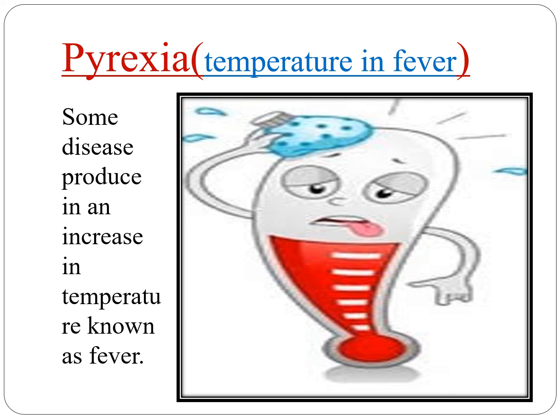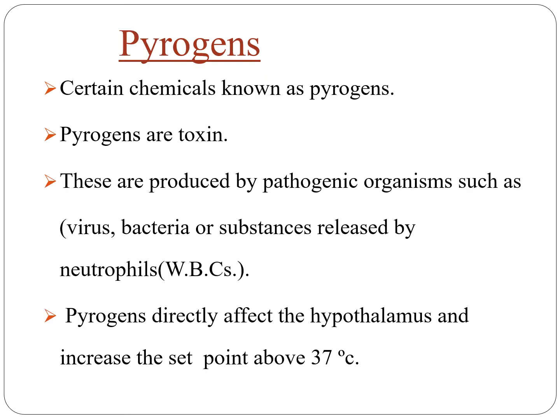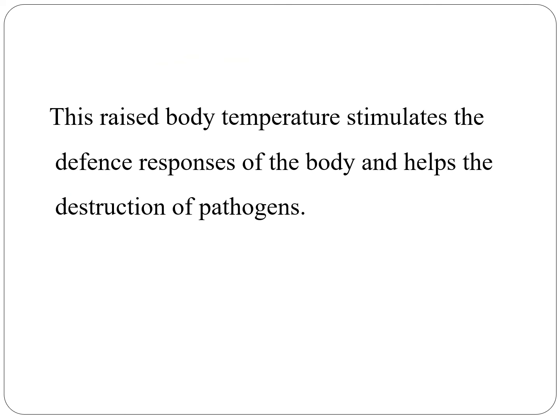Pyrexia — fever — is an increase in temperature. Fever is also known as pyrexia, a response causing the body to overheat due to an increase in body temperature above the set point. There is no single agreed-upon upper limit for normal temperature, with sources using values between 37.5 and 38.3 degrees centigrade, or 99.5 and 100.9 degrees Fahrenheit. Certain chemicals known as pyrogens are toxins produced by pathogenic organisms such as viruses, bacteria, or substances released by neutrophils, which are white blood cells. Pyrogens directly affect the hypothalamus and increase the set point above 37 degrees centigrade. This raised body temperature stimulates the defense responses of the body and helps the destruction of pathogens.